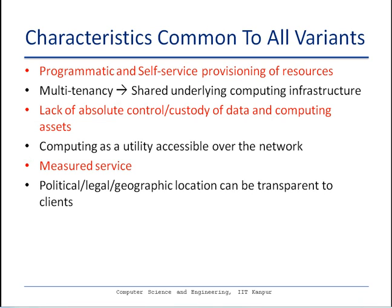Another important characteristic is that the location of services provided by a cloud vendor can often be transparent to consumers. As a consumer deploying an application in a cloud environment, you may not always know the geographic location or legal and political jurisdiction where your data or application is actually running. For example, on platforms such as Google App Engine, you do not have much control or awareness of where your data resides geographically. If this is sensitive for your application, it becomes a concern.